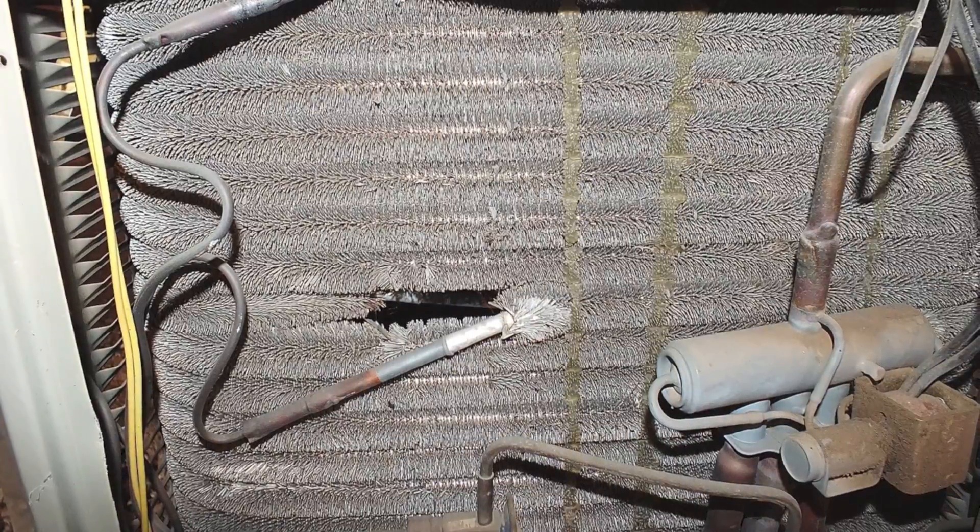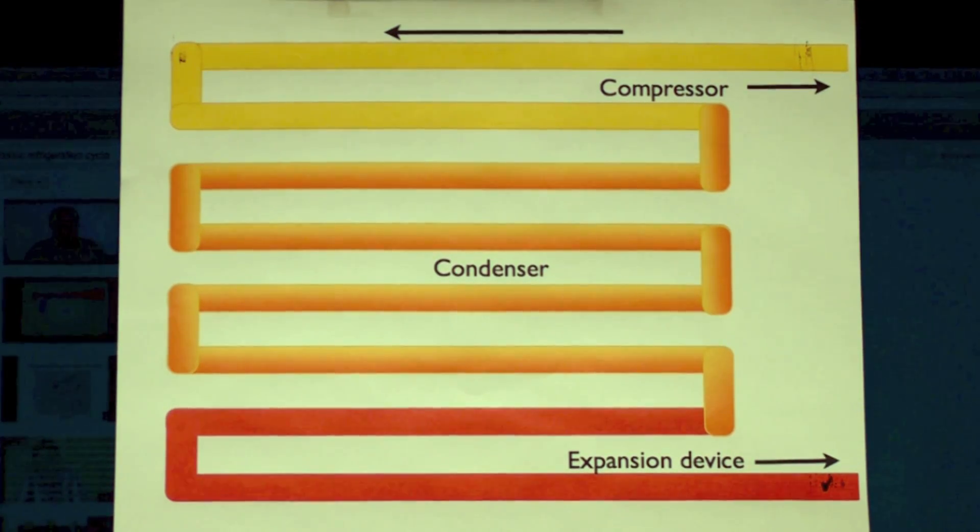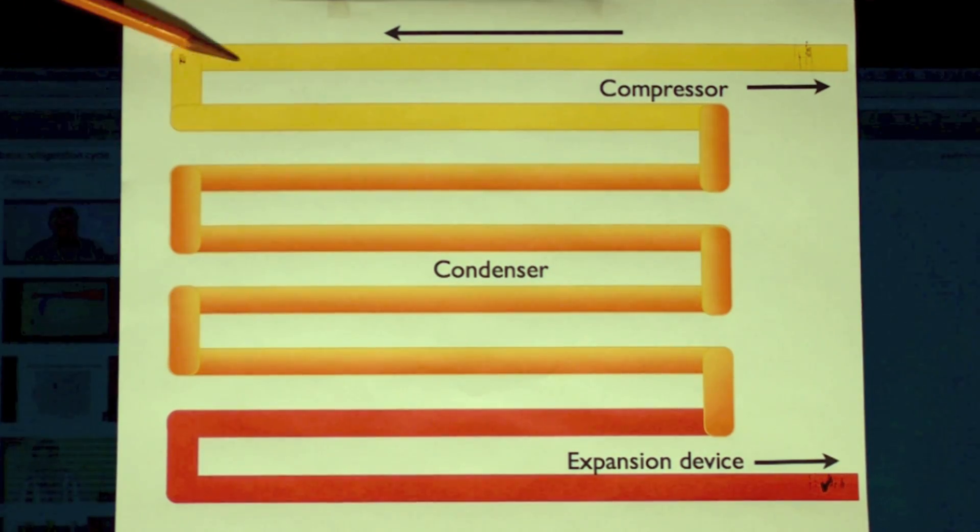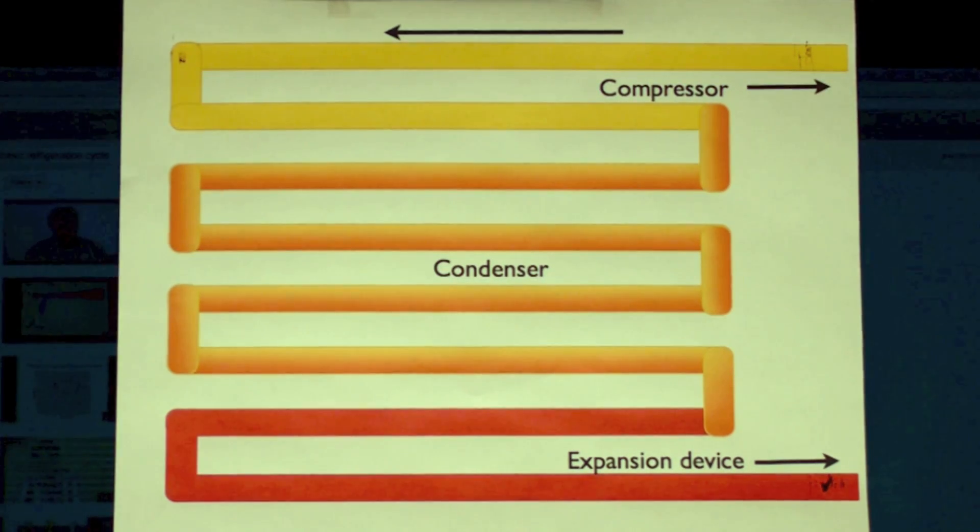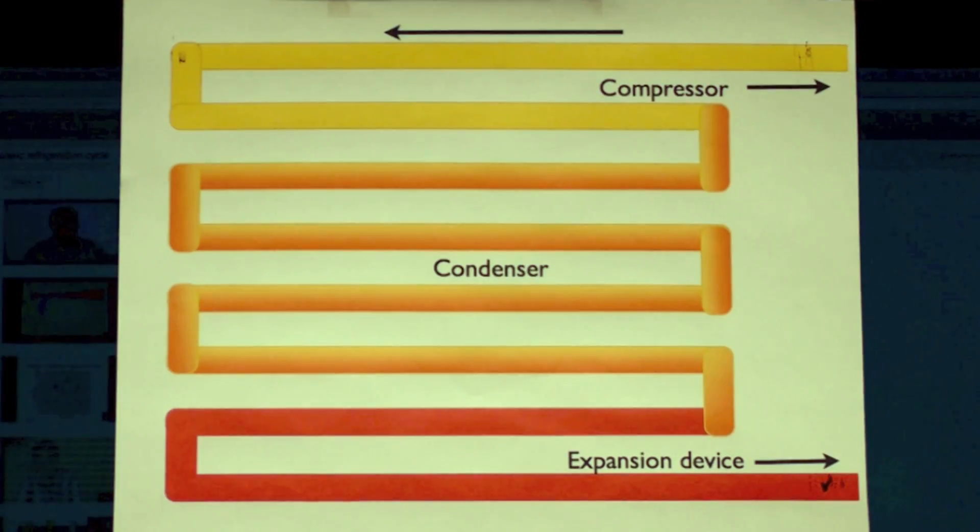Okay, the condenser's job. The condenser has three functions. The first function is to desuperheat. We're coming from the compressor here, going over like this. The yellow is the hot gas desuperheating down. This is an air-cooled condenser, that can be water-cooled. It runs between 20 and 30 degrees above the outside ambient.